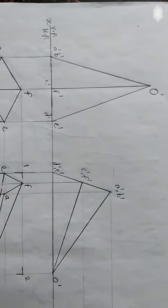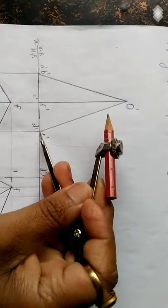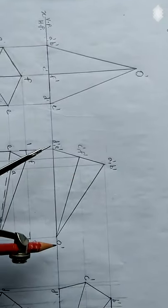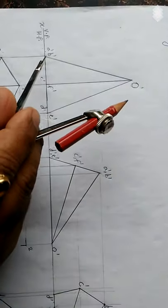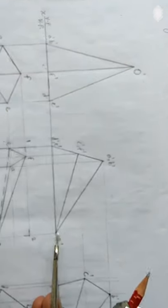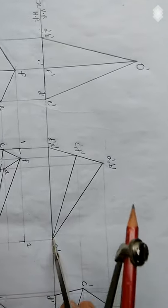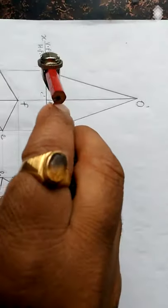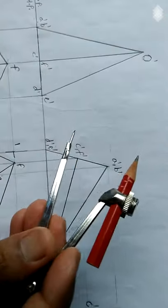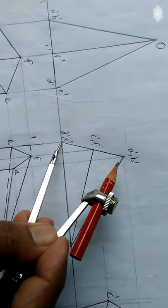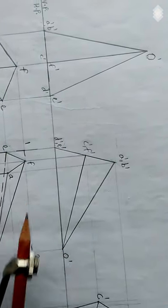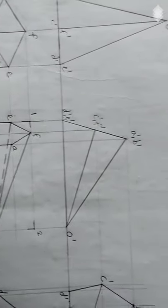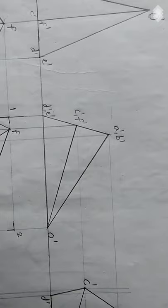Using the compass, I picked this length and transferred it here. From O-dash I marked an arc, then picked the base length and from D-dash C-dash marked a second arc. The intersecting point gives A-dash B-dash, and in this way the triangle is finished. This is the third image. Now the fourth image is a different secondary image.